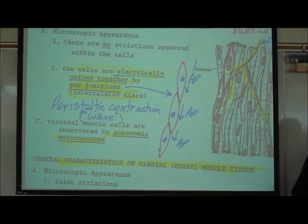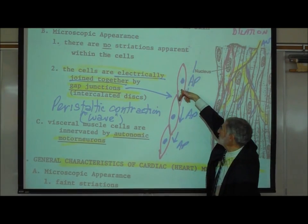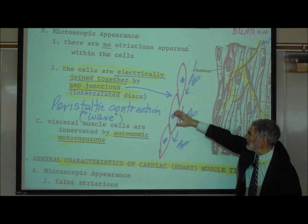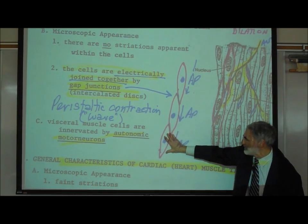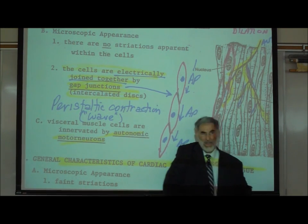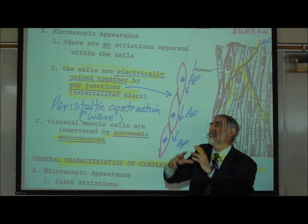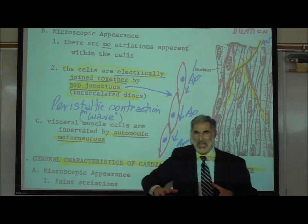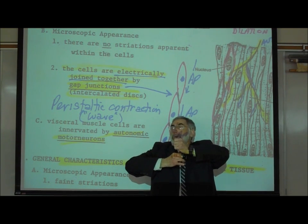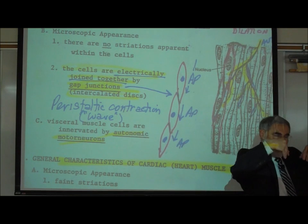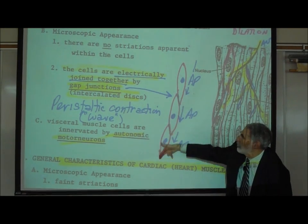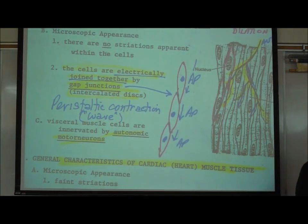The action potential traveling through cells determines the order in which they contract. The action potential leads to contraction, so first one cell contracts, then the action potential travels to the next cell and that one contracts, and so on. This creates a phenomenon called a peristaltic contraction or peristaltic wave. Because the visceral smooth muscle in the wall of your digestive tract is organized this way, it creates a peristaltic wave — a contractile wave that begins at the upper part of the digestive tract and pushes downward. That's what pushes food from the mouth end of your alimentary canal to the anal end.